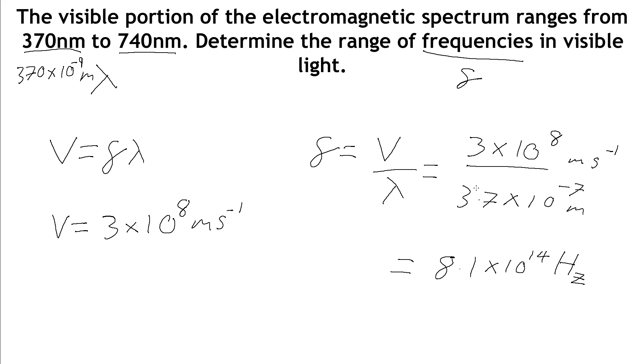We repeat this but with 7.4 times 10 to the minus 7 meters to get the 740 nanometer wavelength. The frequency at 370 nanometers is 8.1 times 10 to the 14, and at 740 nanometers we get a frequency of 4.1 times 10 to the 14 hertz.